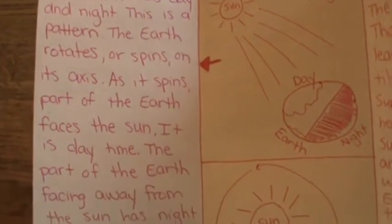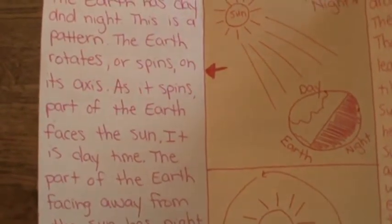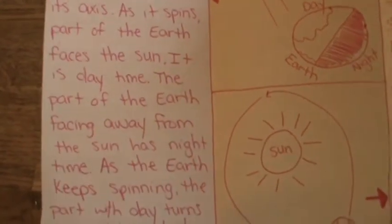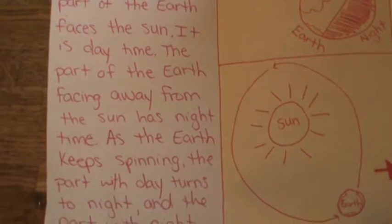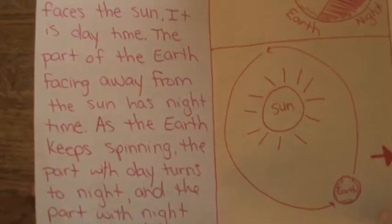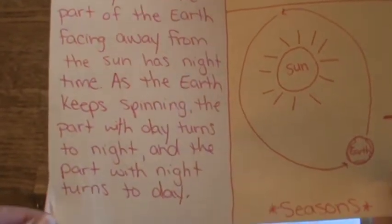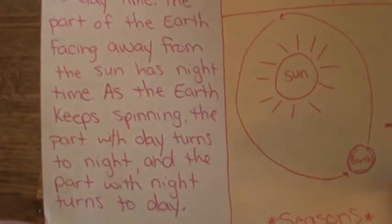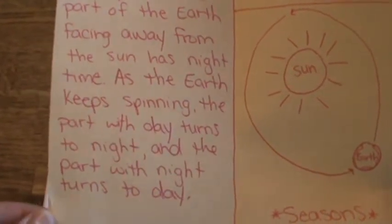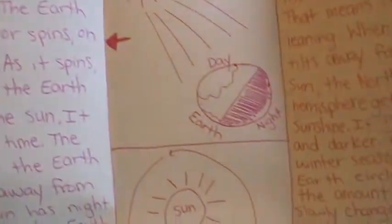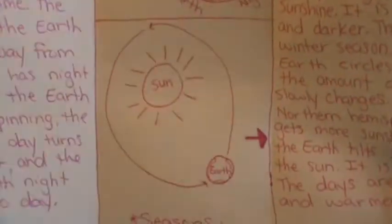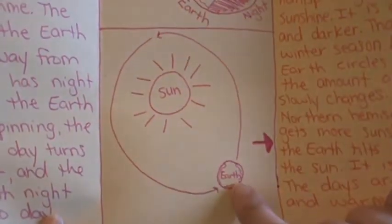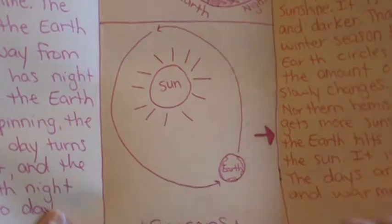They might write something like: 'The Earth has day and night — this is a pattern. The Earth rotates or spins on its axis. As it spins, part of the Earth faces the Sun — it is daytime. The part facing away from the Sun has nighttime. As the Earth keeps spinning, the part with day turns to night and the part with night turns to day.' That's how we have the pattern of day and night.